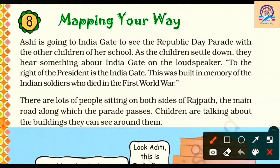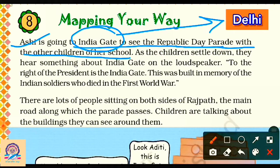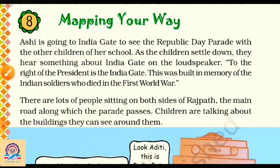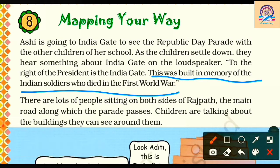At the start of the chapter there is a story: Ashi is going to India Gate to see the Republic Day parade with other children from her school. India Gate is located in Delhi. As the children settle down, they hear an announcement on the loudspeaker which says: 'To the right of the President is India Gate. This was built in memory of Indian soldiers who died in the First World War.' So remember — India Gate is built in memory of Indian soldiers who died in the First World War.